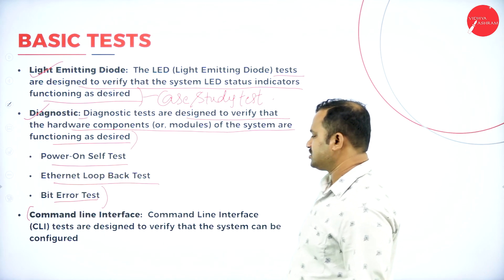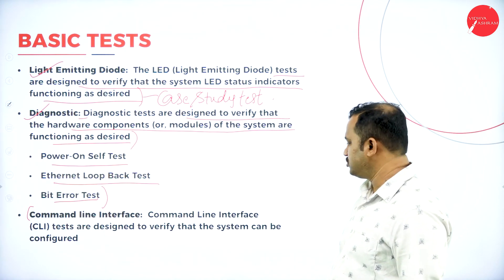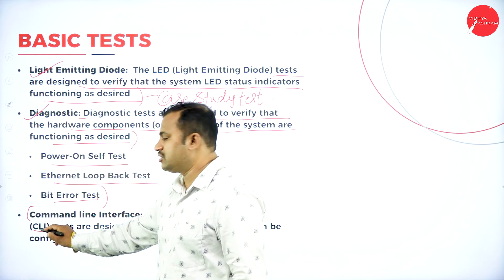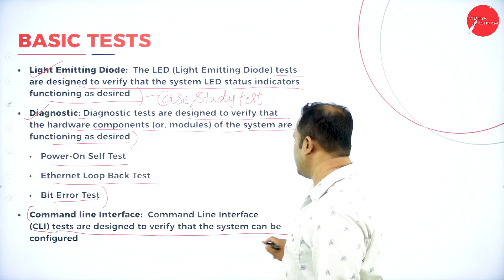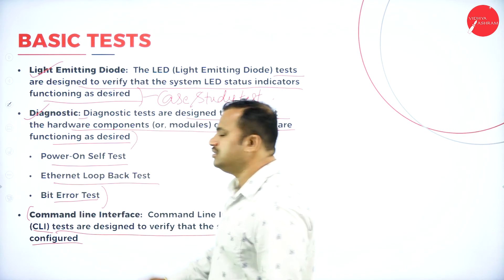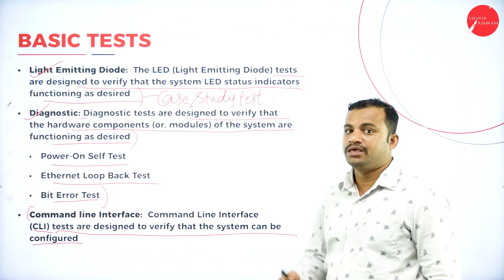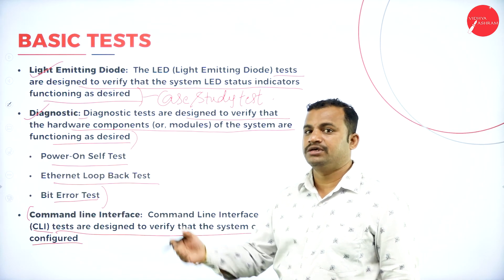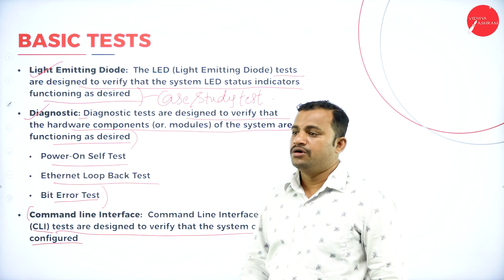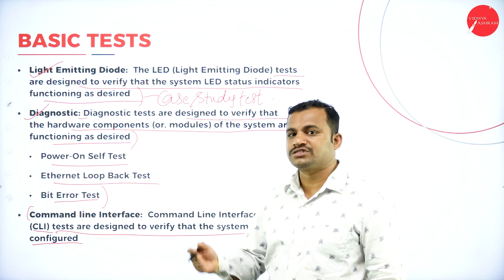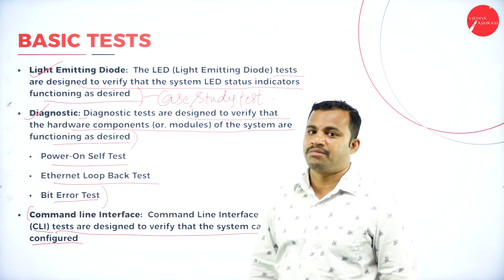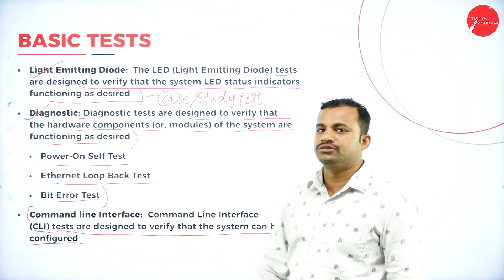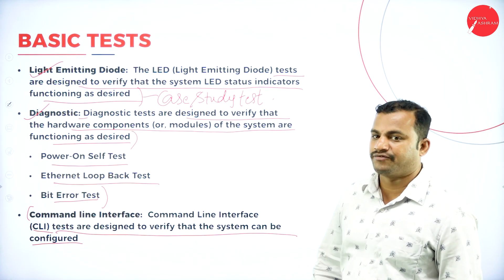Then, command line interface — CLI. These tests are designed to verify that the system can be configured in the form of commands. For example, in the Unix or Linux operating system, most interfaces with the system are done in the form of commands. By giving commands to the system, it has to rectify and work according to the requirements of the client. That is called as the command line interface.